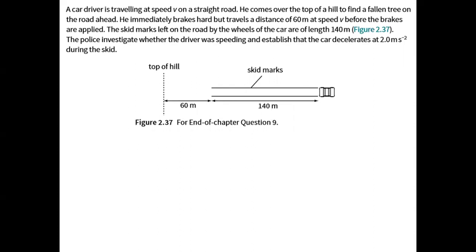For the first problem, a car driver is traveling at speed v on a straight road. He comes over the top of a hill to find a fallen tree on the road ahead. He immediately brakes hard but travels a distance of 60 meters at speed v before the brakes are applied. The skid marks left on the road by the wheels of the car are of length 140 meters. The car decelerates at 2.0 meters per second squared during the skid, and after the 140-meter skid the final velocity of the car will be zero — it stopped moving.